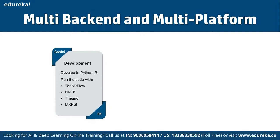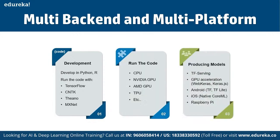Theano claims it can recognize numerically unstable expressions and recompute them with more stable algorithms. On the other hand, TensorFlow is the rising star in deep learning frameworks, developed by the Google Brain team — the most popular deep learning tool available, with many features and researchers contributing to the framework. We can run code on CPUs, GPUs anywhere. In terms of producing models we have TF Serving, GPU deployments using Keras, WebKeras, TF Lite for Android, native code machine learning libraries, and support for Raspberry Pi's for IoT components.